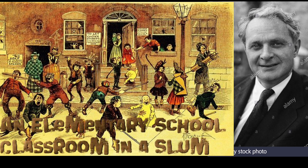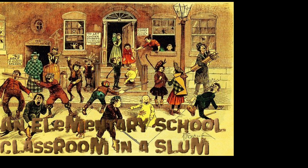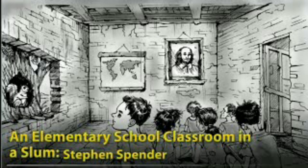In this poem, he wants to draw the attention of the society and the government to the dismal condition under which those children live and study. There is a map that shows beautiful cities, ships and love, but these children are deprived of these. He wants that children should be given education in a conclusive atmosphere. Now with this introduction, let us know about its summary more clearly.